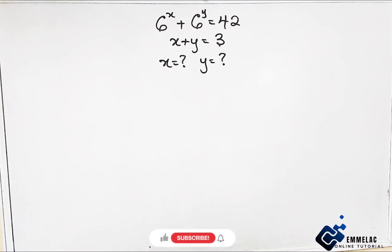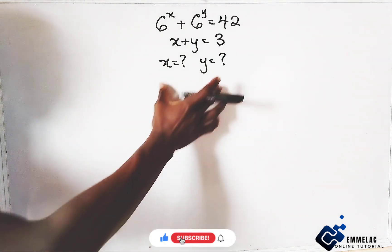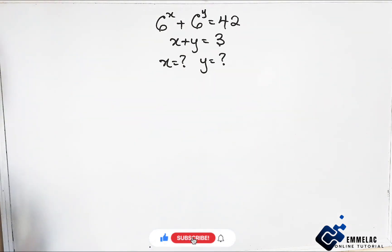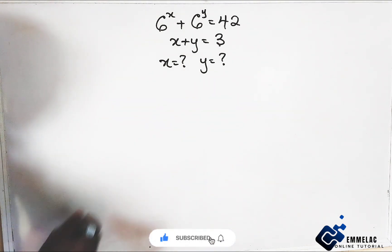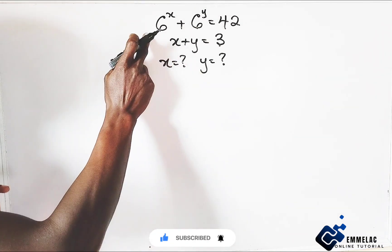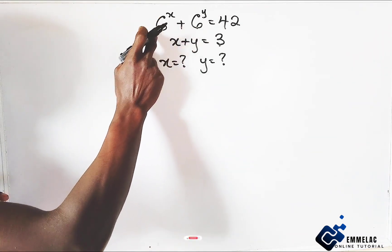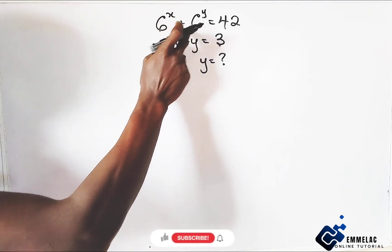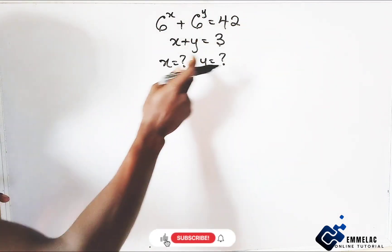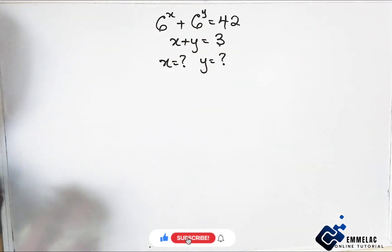Welcome to a Melancho Maths online tutorial. Before us is this Olympiad math problem and we are told to find the value of x and y, if 6 raised to the power of x plus 6 raised to the power of y equals 42, and x plus y equals 3.